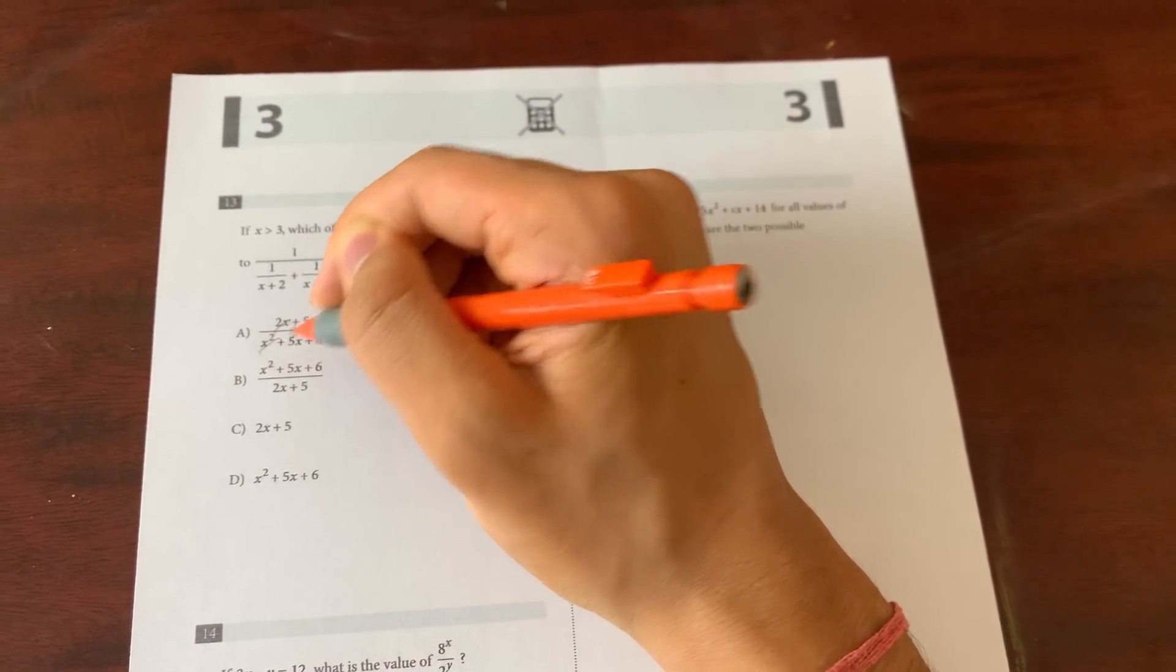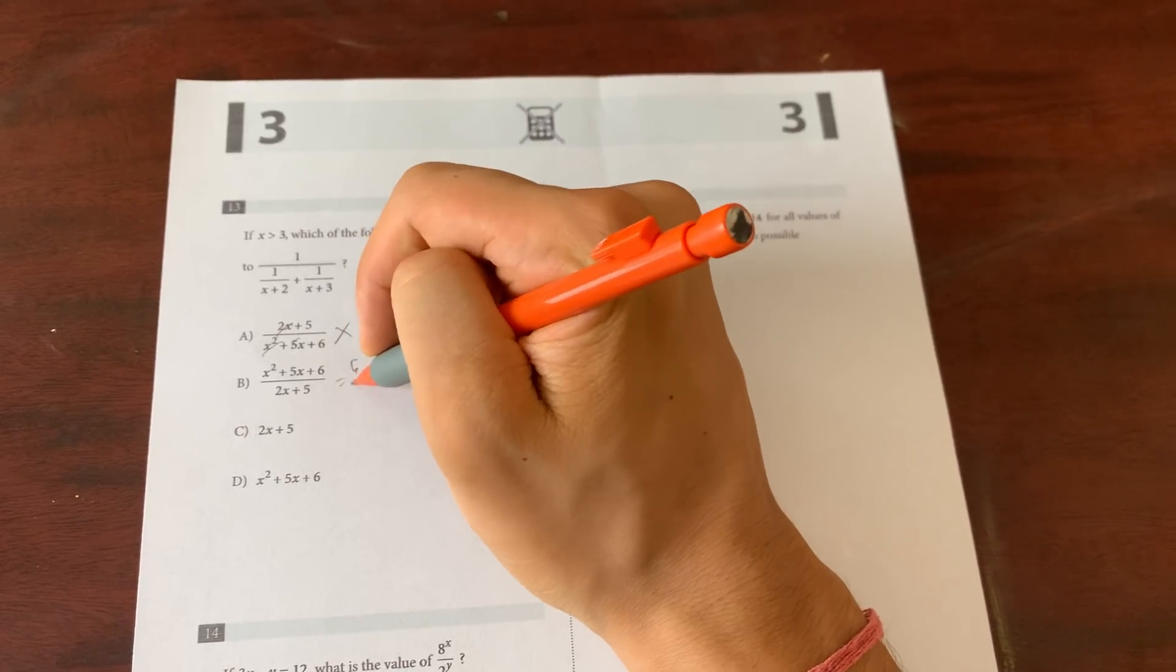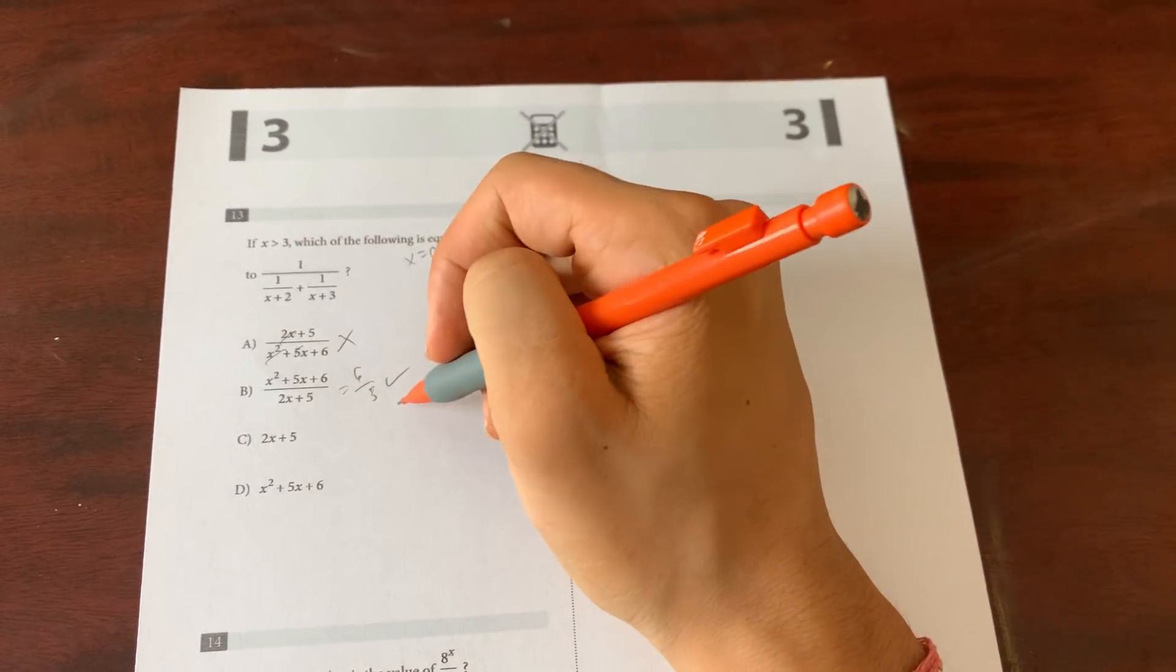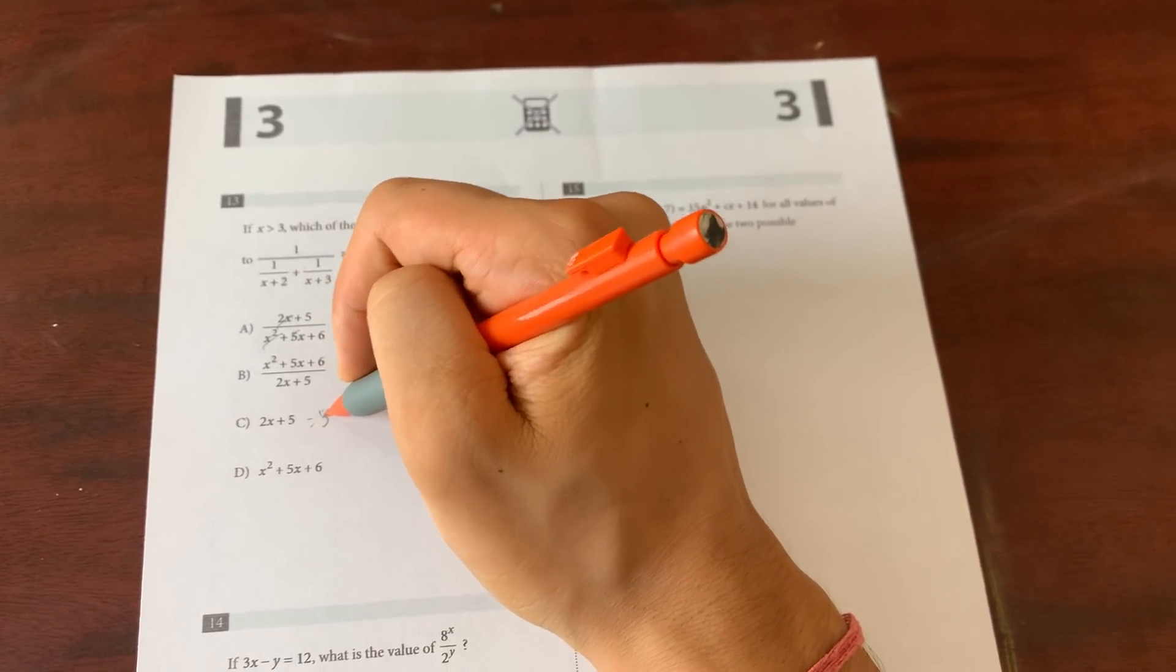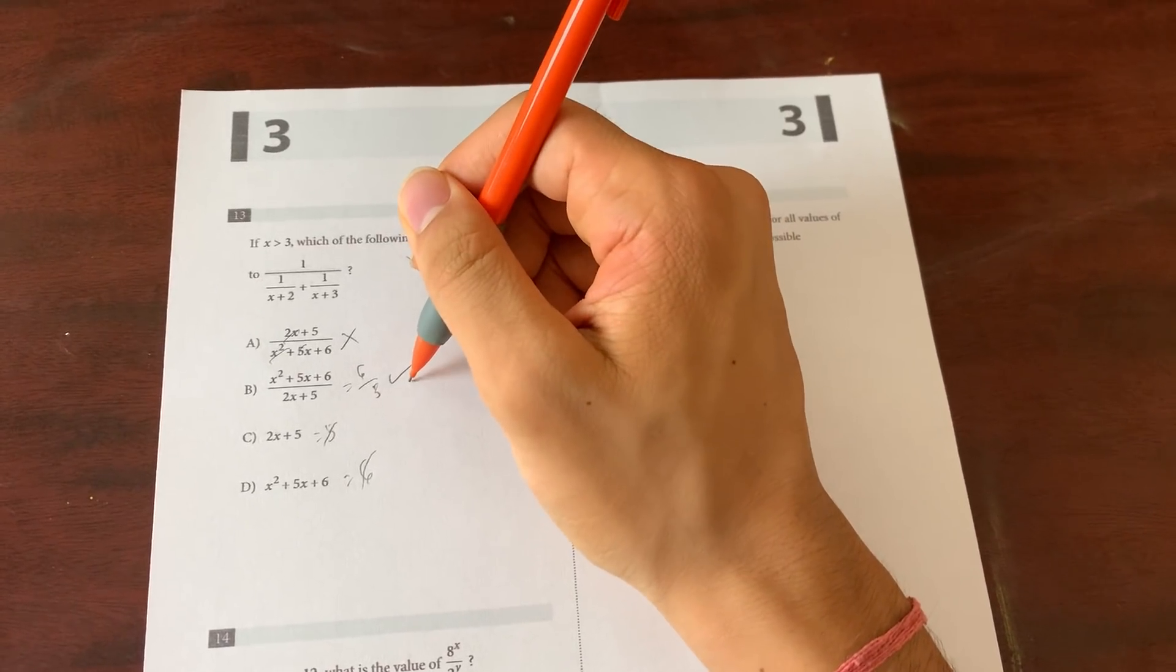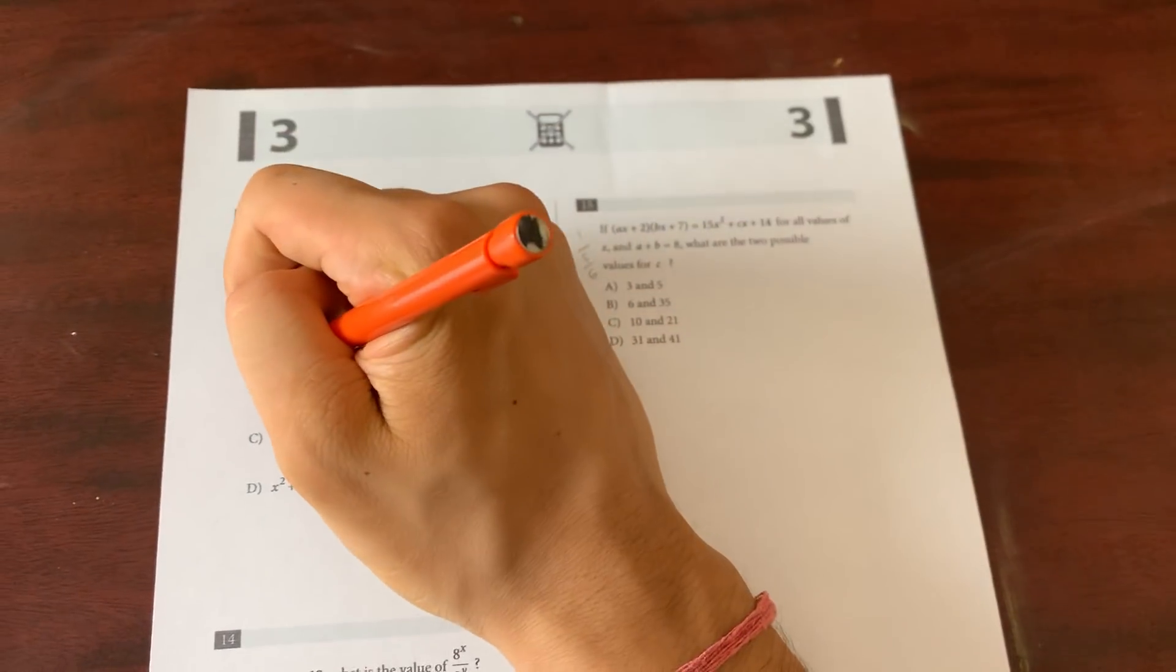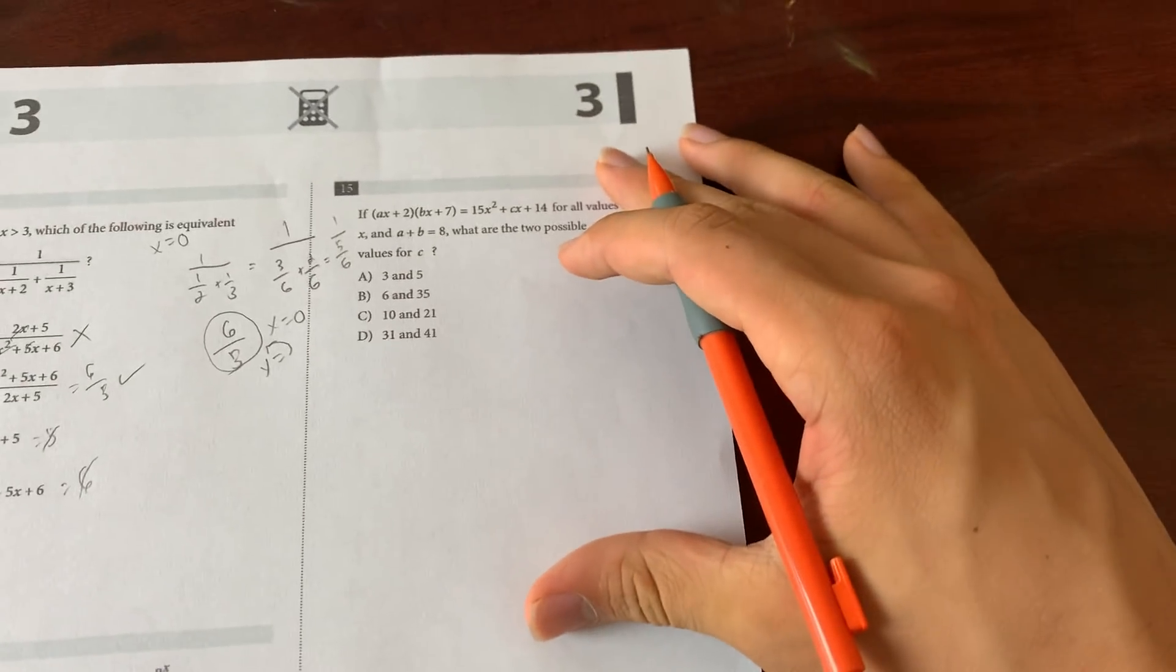So let's plug in 0 to the first one, you get 5/6, that's not 6/5, gone. Plug in 0 you get 6/5, so this works, so this passes on to the next round. You plug in 0 you get 5, you plug in 0 you get 6. So only one problem passed on to the next round, so obviously that is the correct answer. Number 13 is B, very simple.